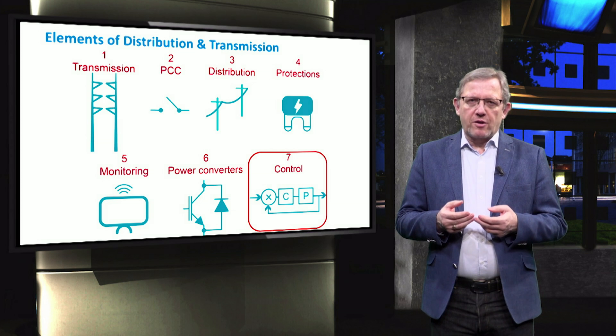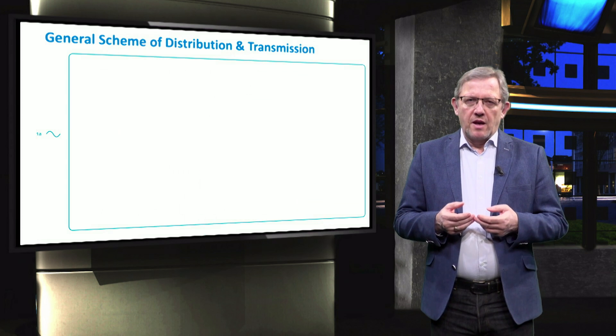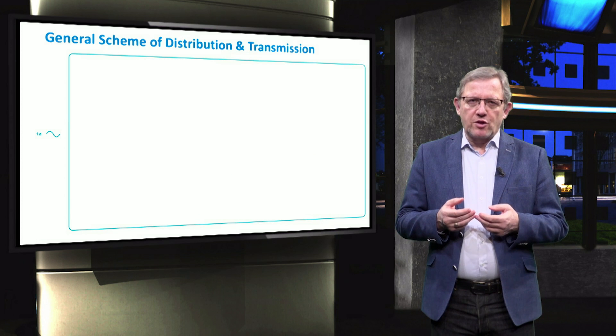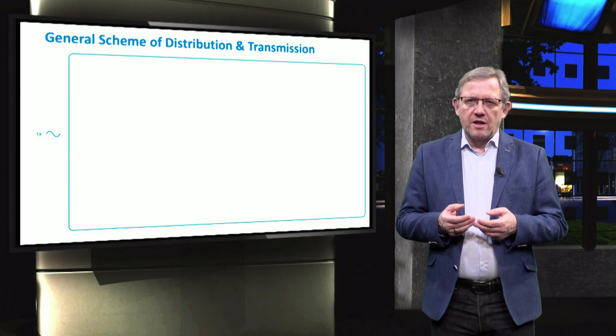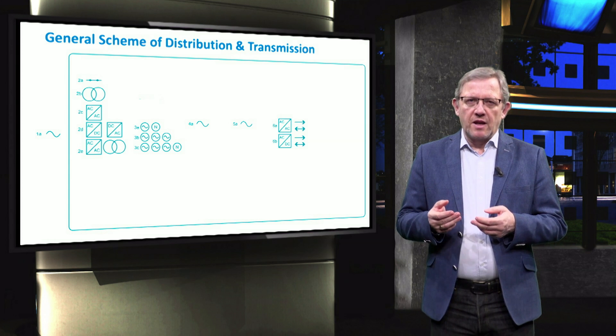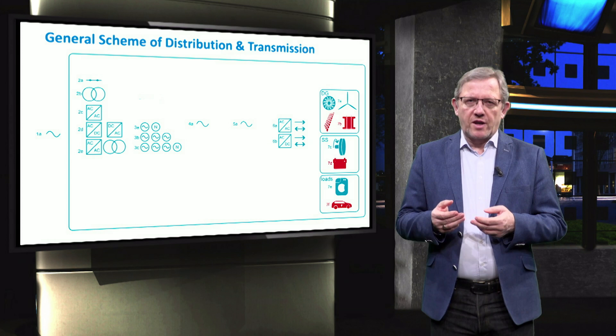Here we show a general scheme of the transmission and distribution AC system from transmission side on the left hand side to the distribution side in the middle and then to the demand side on the right hand side.